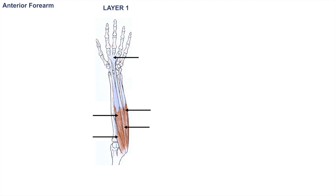We're first going to break down the forearm into anterior and posterior portions. So we're first going to look at the anterior anatomy of the forearm. The anterior muscular anatomy is actually in layers — there are four layers of muscles — and we're going to look at layer one here first.